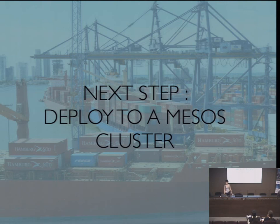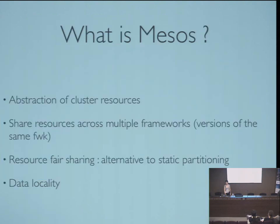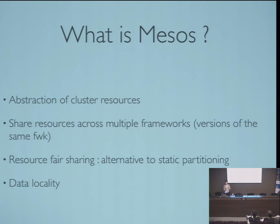In the next step, we are going to deploy to a Mesos cluster with two Mesos slaves and one Mesos master. Mesos is the abstraction of cluster resources. The aim is to have different frameworks in the same cluster, because there is no optimal framework for all problems — for example, running Hadoop and Spark in the same cluster. Mesos provides the minimal common interface to permit this.